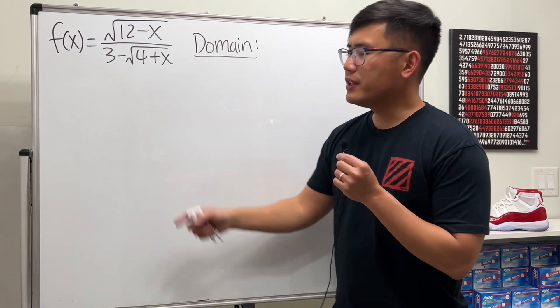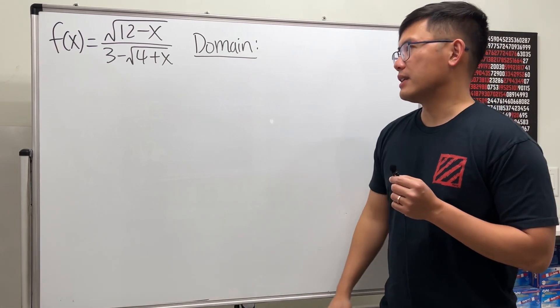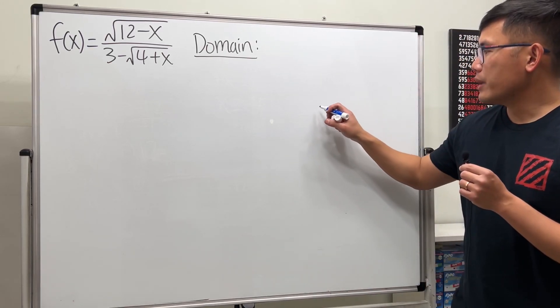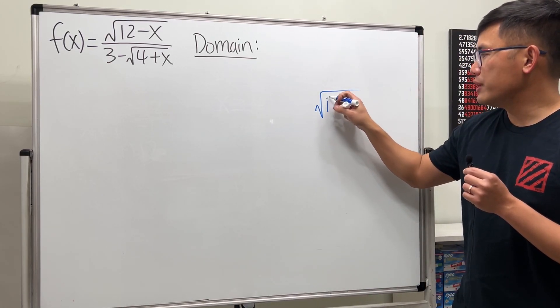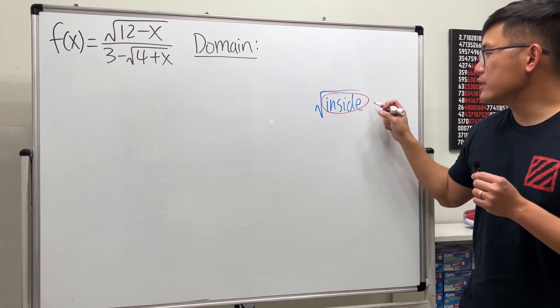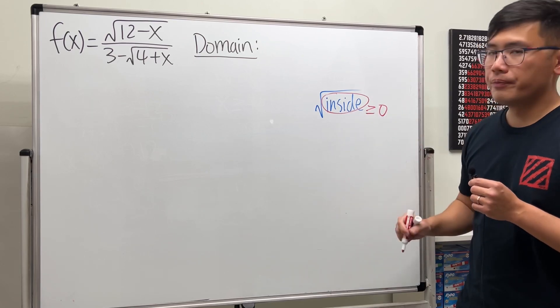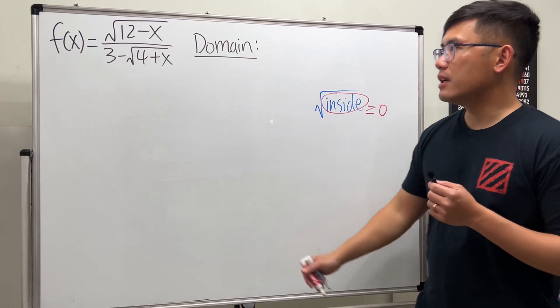Okay, here we are given a crazy function and we are going to find out its domain. Let me just give you guys some quick review first. Whenever we have a square root of an expression inside, keep in mind we will have to make sure that the inside is greater than or equal to zero. That's a restriction when we have square roots.